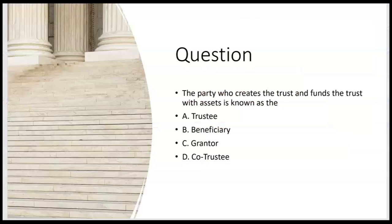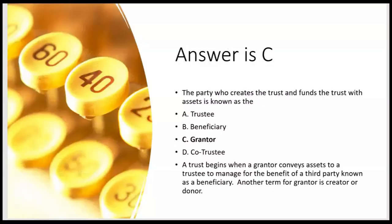The party who creates and funds the trust with assets is known as: A — the trustee? No. B — the beneficiary? No. C — grantor? Yes. D — co-trustee? No. C is correct. A trust begins when a grantor conveys assets to a trustee to manage for the benefit of a third party known as a beneficiary. Another term for grantor is creator or donor.